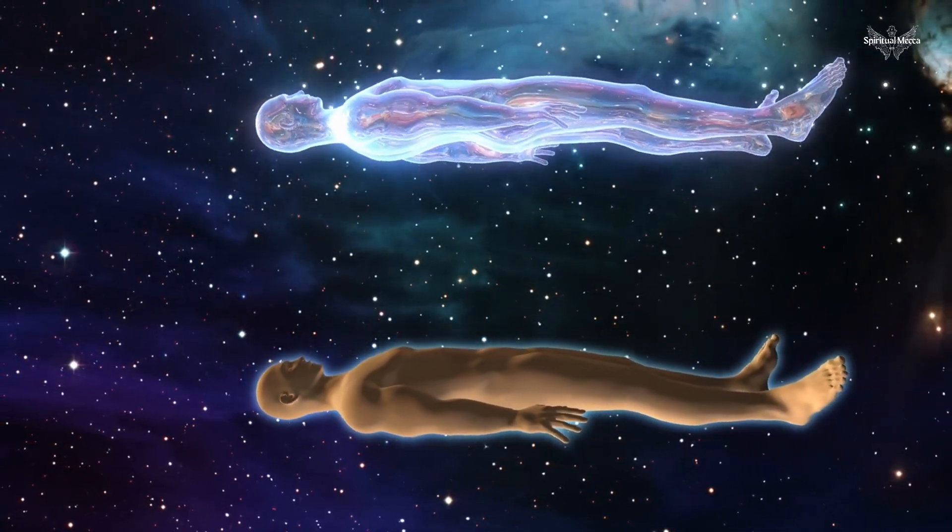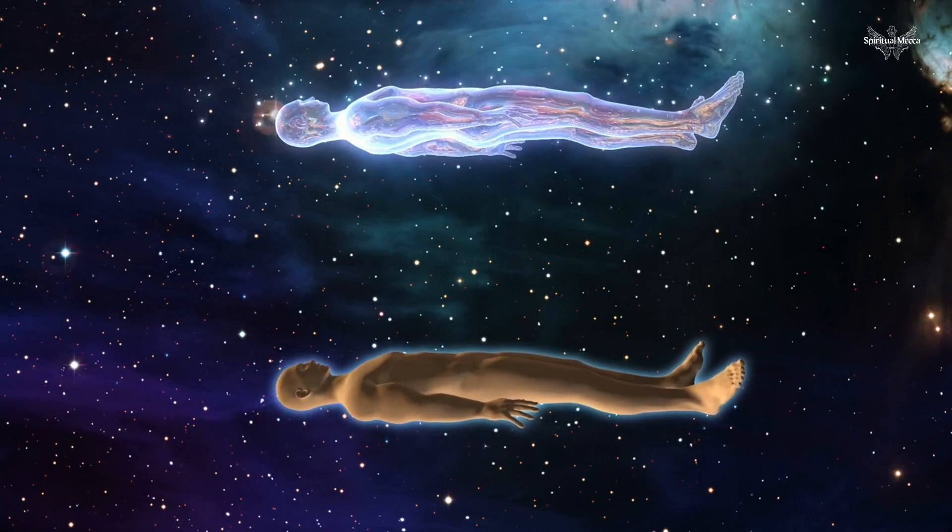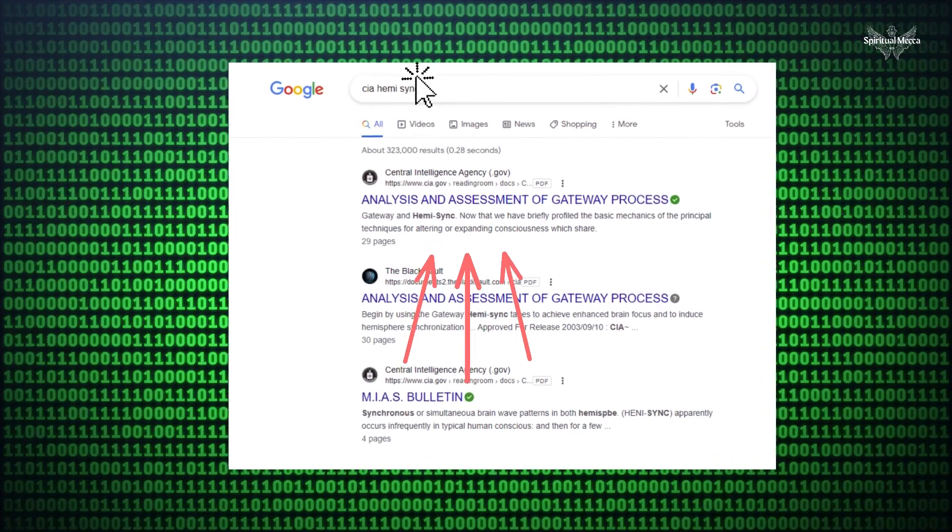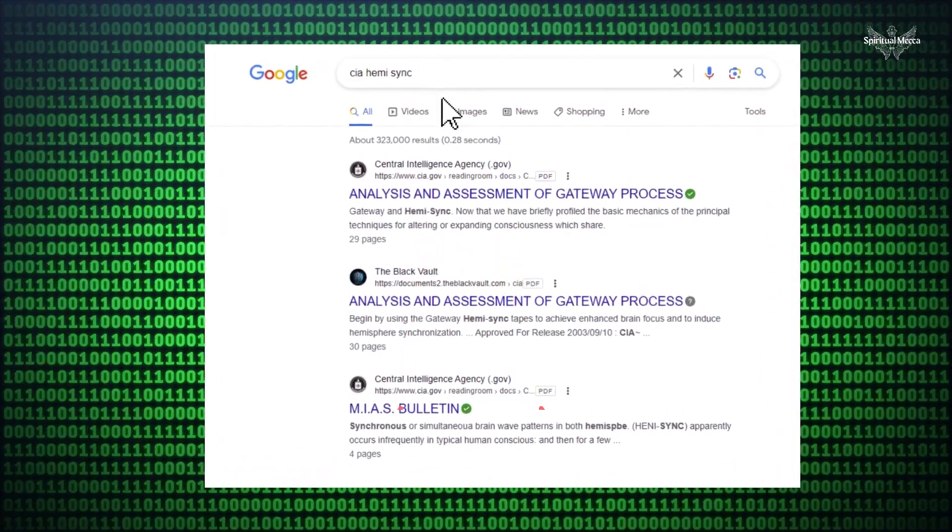Astral projection is in fact real, and it also explains how human consciousness can be altered. You can find and download this report by searching CIA Hemisync in Google.